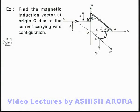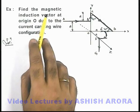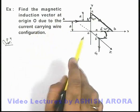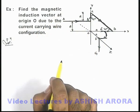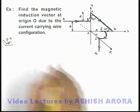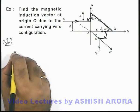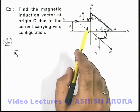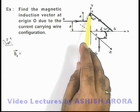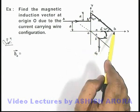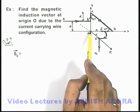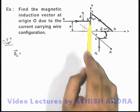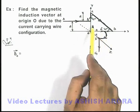In this example, we are required to find the magnetic induction vector at the origin due to the current-carrying wire configuration shown in the figure. The magnetic induction at the origin will be due to different wire segments. Due to wire segments B-C and D-E, there will not be any magnetic induction at O because point O lies along the line of these wire segments.